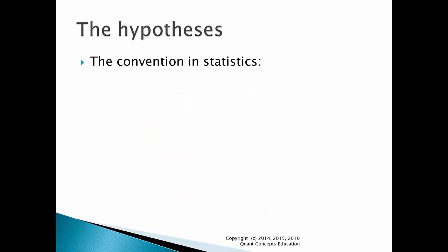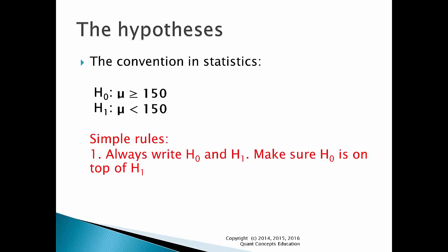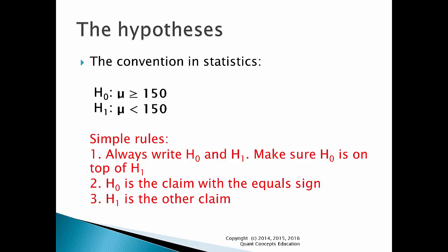The claim with the equal sign will be called the null hypothesis. The other claim without the equal sign is called the alternate hypothesis. The convention in statistics is to set up the two hypotheses as follows. First, we write down H0 — the symbol for the null hypothesis. Below that we write down H1 — the alternate hypothesis. Make sure you write down the null and alternate hypotheses in this order: the null first and the alternate below it. Simply insert the null hypothesis — the claim with the equal sign — next to H0, and the alternate hypothesis next to H1. And that's all there is to correctly setting up the hypotheses. Always write H0 and H1, making sure H0 is on top of H1. H0 is the claim with the equal sign; H1 is the claim without the equal sign, otherwise known as the alternate hypothesis.